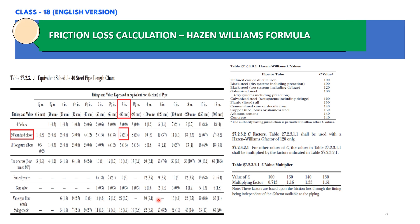This chart is used for schedule 40 steel pipe. If you have other pipe types such as concrete, asbestos cement, plastic, or HDPE pipe, you need to consider the C value and multiply the equivalent pipe length by the appropriate multiplication factor shown in NFPA 13 Table 27.2.3.1.